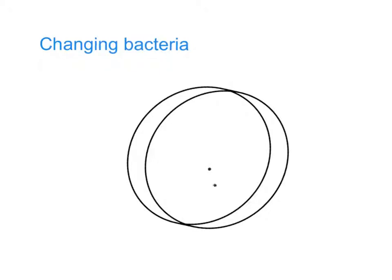Every 20 minutes it will reproduce another. 20 minutes later each of those will have produced another, and so on. Over a period of a day you can have millions of bacteria invading the human body, or indeed the petri dish. Normally in the petri dish they might grow in colonies, but here they're shown spread out.